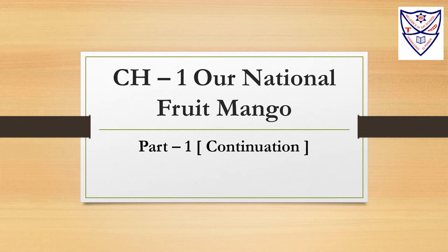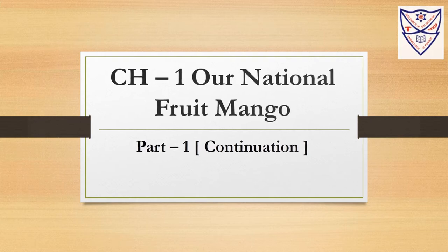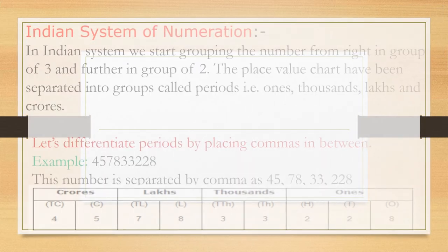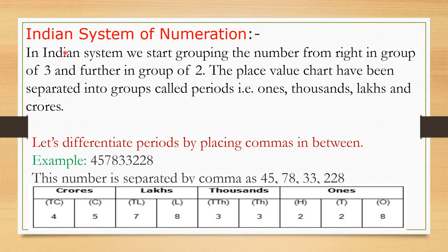In the Indian system, we start grouping numbers from the right in groups of 3, and further in groups of 2. The place value chart is separated into groups called periods — ones, thousands, lakhs, and crores. Let's differentiate periods by placing commas in between.